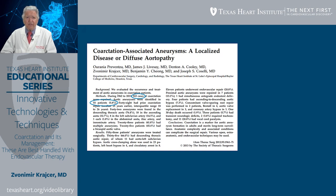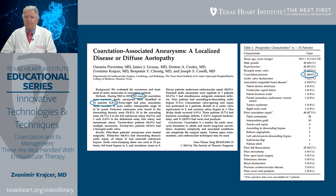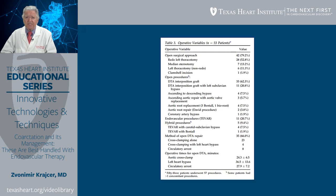At our institution, we reviewed our long-term experience with coarctation repair, encompassing more than 900 coarctations performed over an extended period. Of these, 55 patients developed aneurysms after surgical repair on long-term follow-up. Coarctation was still present in a significant number of these patients, requiring treatment of both the coarctation and the aneurysm. Patients underwent open surgical repair in almost 80% of cases, while 11 patients — approximately 21% — had endovascular repair.